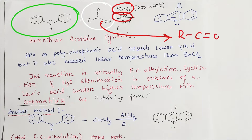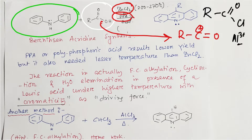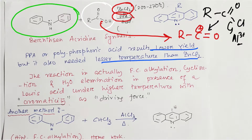This produces an acylium cation (RC≡O⁺). Students, you know this well because in Friedel-Crafts acylation we use reagents like RCOCl and AlCl₃ — the chloro eliminates and produces the same acylium cation. An interesting point: polyphosphoric acid results in lower yield but also needs lesser temperature compared to zinc chloride. The temperature required is 200–270°C.